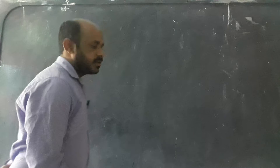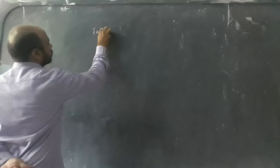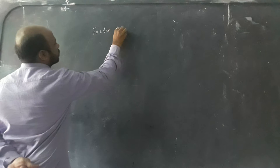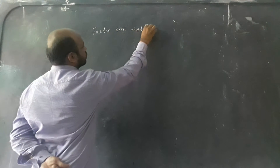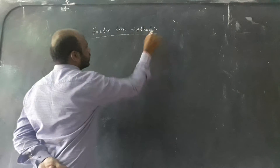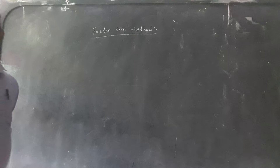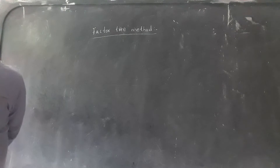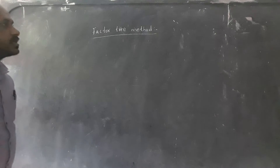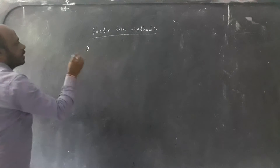The first one is the factor tree method. I will explain about the factor tree method. For example, we are using how to write composite numbers as a product of prime numbers. This process we will say prime factorization. Now I will explain about one example.